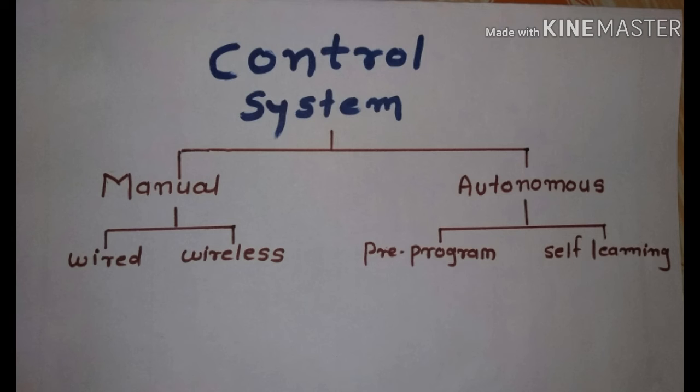Then the control system. Control system is a part of a robot which has two types: manual and autonomous. Manual has two types, wired and wireless. And autonomous also has two types, pre-programmed and self-learning.